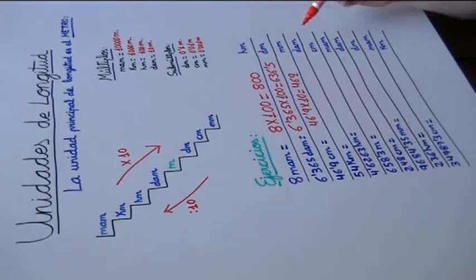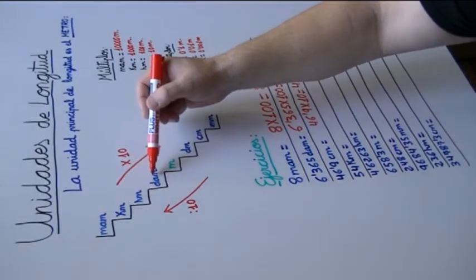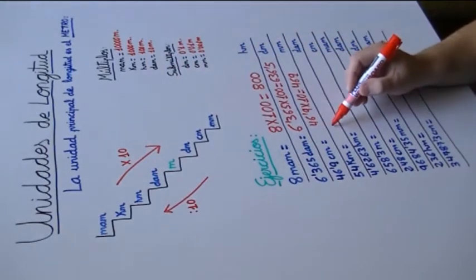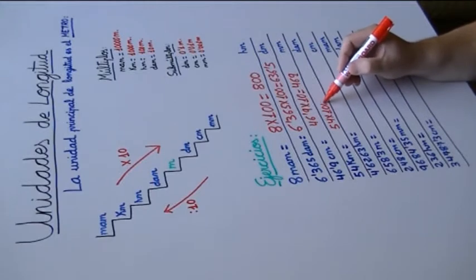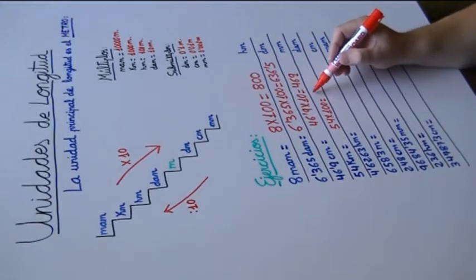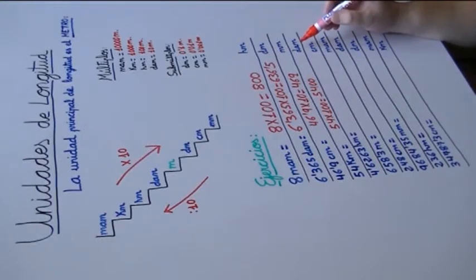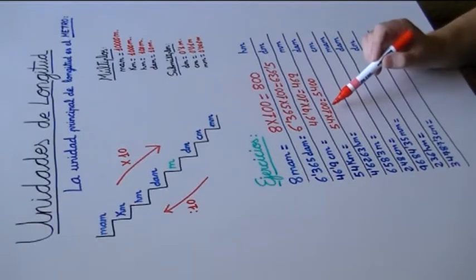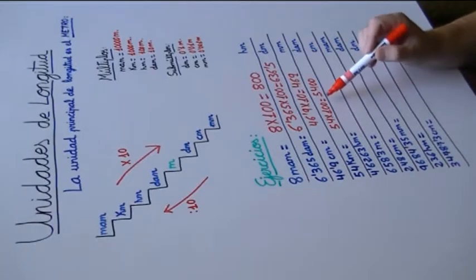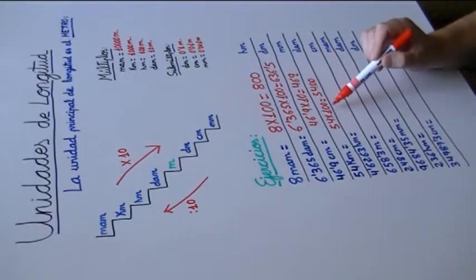54 kilómetros a decámetros. De kilómetros a decámetros, ¿cuántos escalones van? Uno y dos. Pues multiplicamos 54 por 100, que es igual a 5.400 decámetros. Cuando multiplicamos un número natural por la unidad seguida de ceros, dejamos dicho número natural y añadimos tantos ceros como acompañen a la unidad.